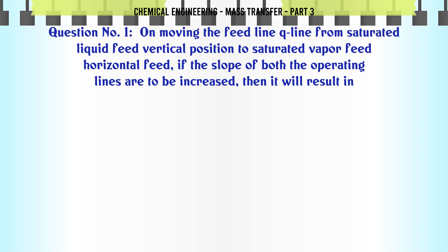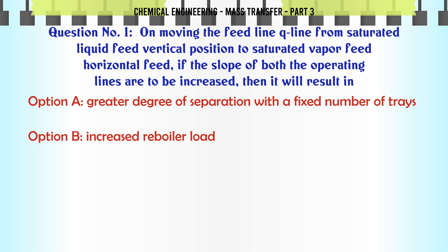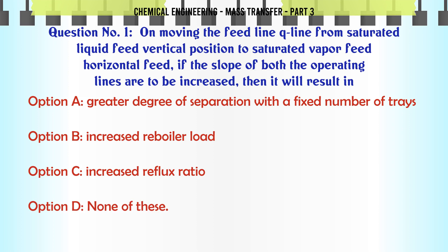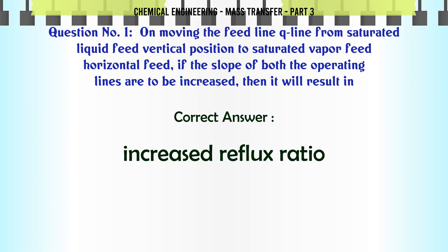On moving the feed line (q-line) from saturated liquid feed (vertical position) to saturated vapor feed (horizontal feed), if the slope of both the operating lines are to be increased, then it will result in a greater degree of separation with a fixed number of trays. The correct answer is: increased reflux ratio.